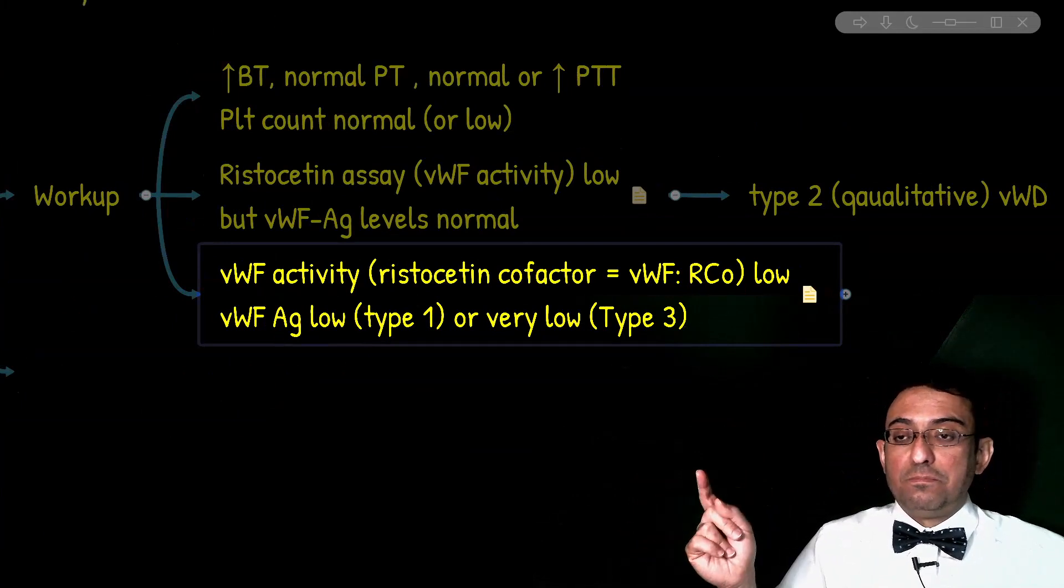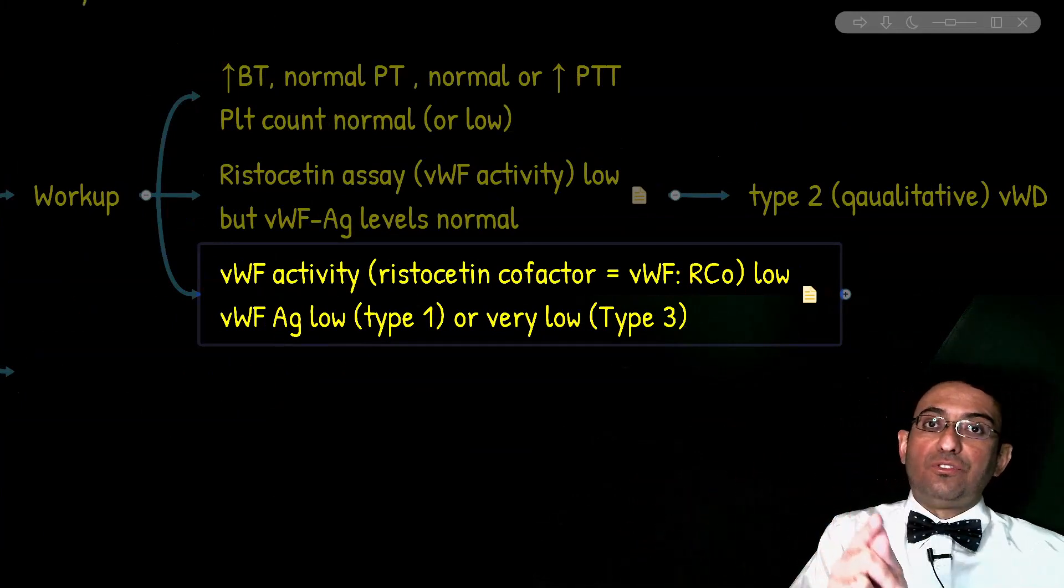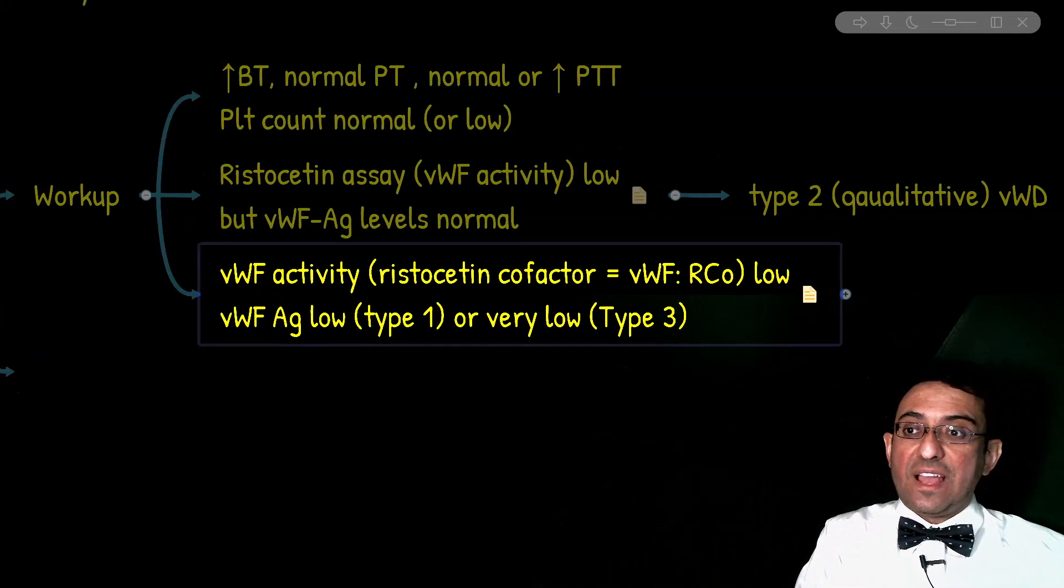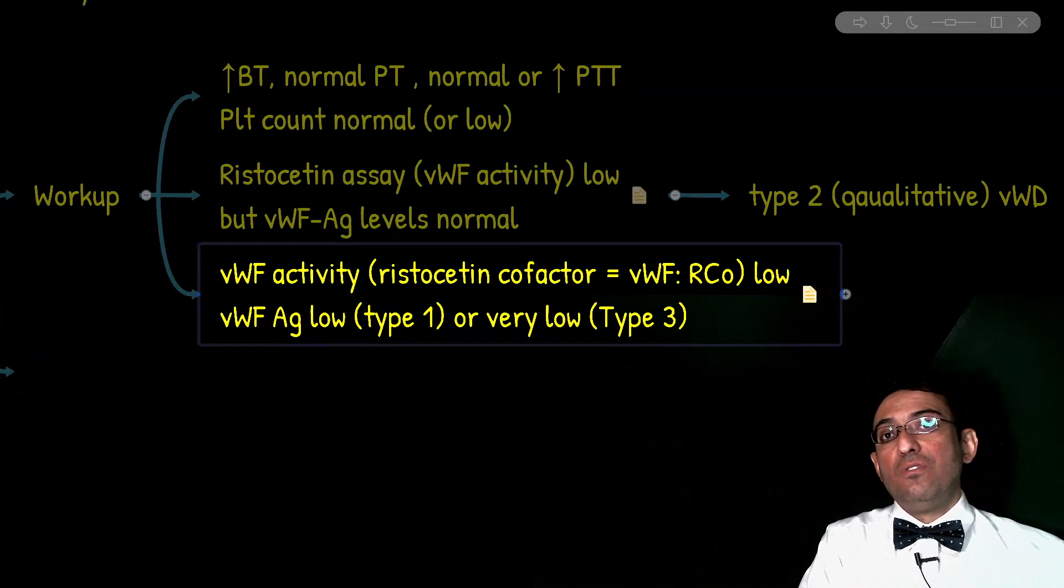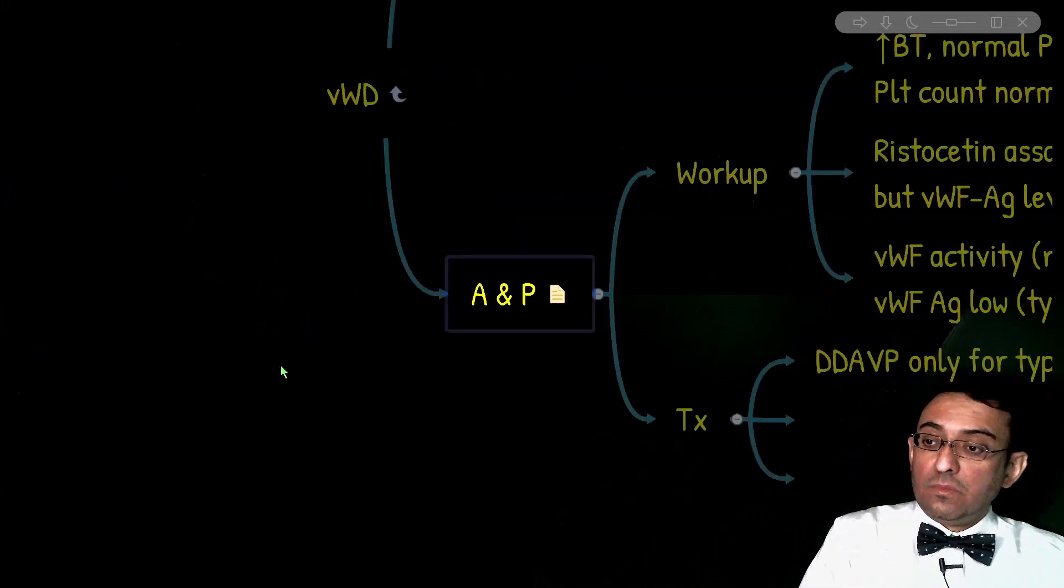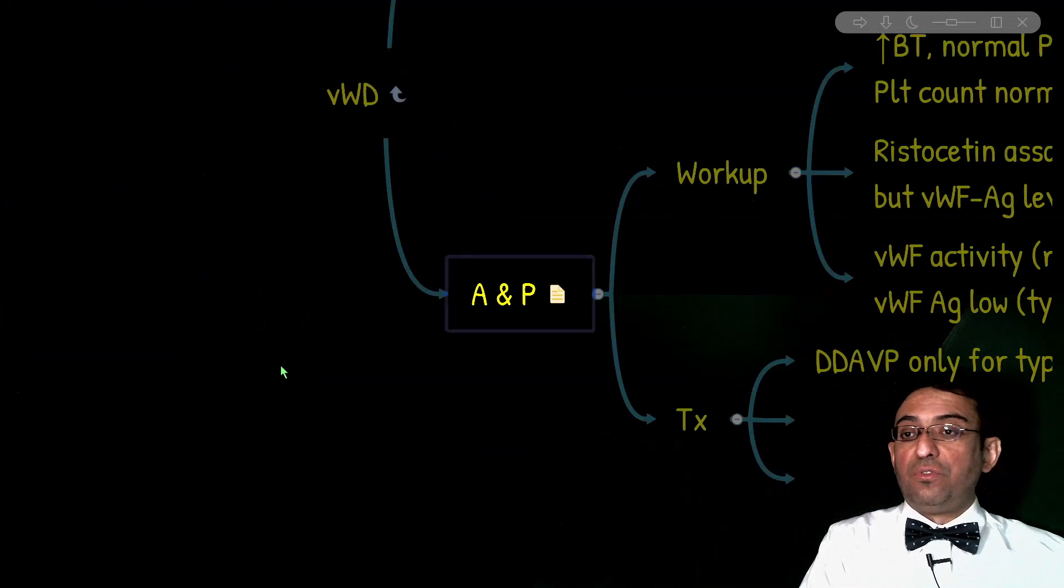The first best test is the Ristocetin cofactor assay. If the antigen level is normal, it's type II. If the antigen level is mild to moderately decreased, it is type I. If the antigen level is severely low, that's type III.